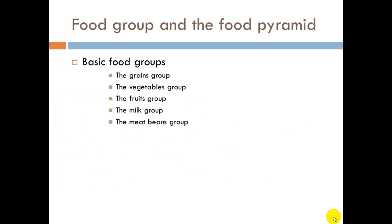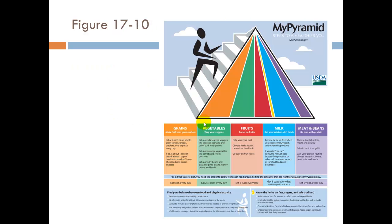Food groups and food pyramid. The basic food groups are grains, vegetables, fruits, milk, and meat or beans — beans being the protein group. This is from the USDA, figure 17-10 in your book, and is based on a 2,000 calorie a day diet.